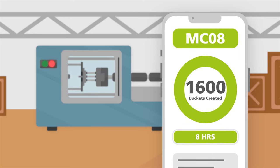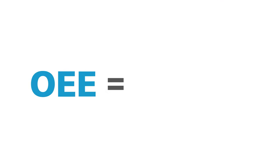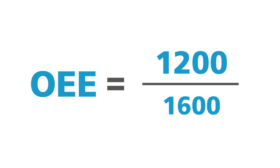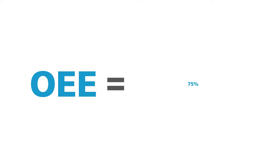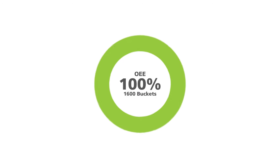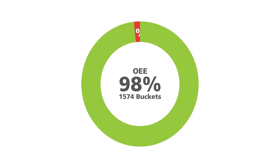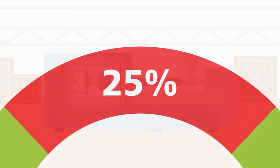However, if you only manage to make 1,200, then the efficiency or effectiveness of your process is only 75%. This indicates a 25% loss — but what's causing it?